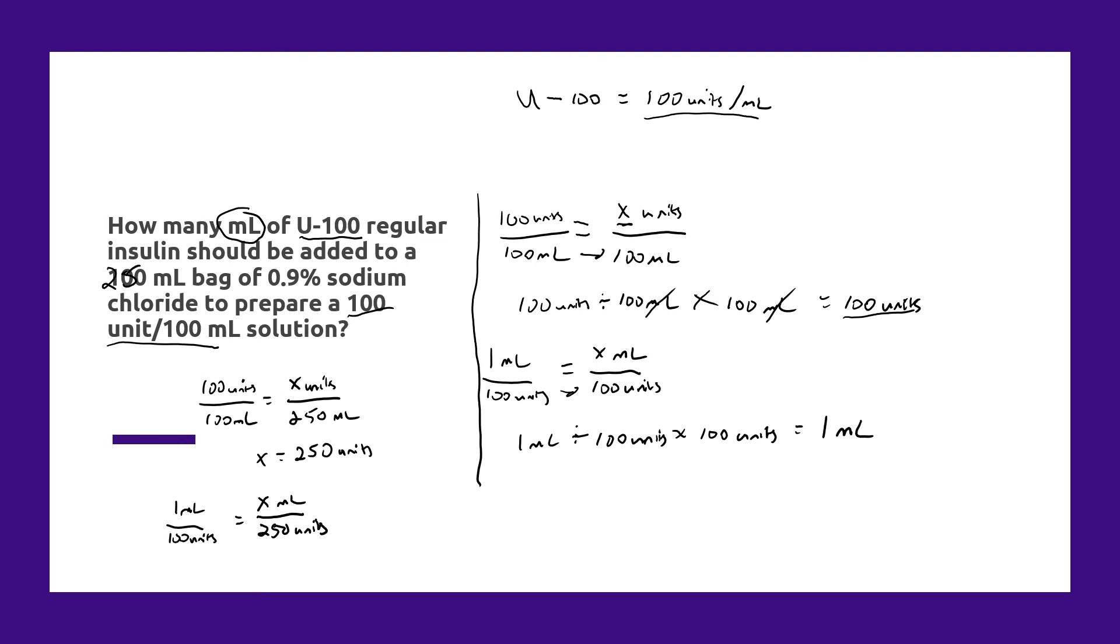And if we did this math, 1 divided by 100 times 250, we would find that X equals 2.5 milliliters. So in that example, you would add 2.5 milliliters of U-100 insulin to the 250 milliliter bag of sodium chloride to get to that concentration of 100 units per 100 mL.